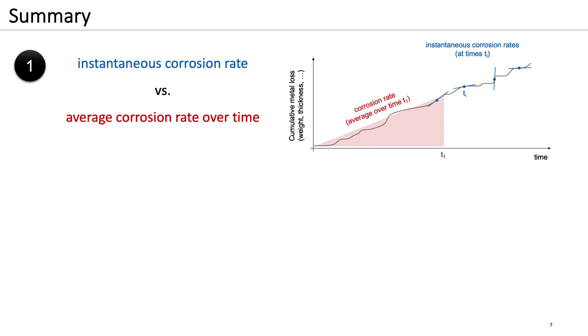In this video, you have learned that corrosion rates can be defined differently. In particular, we distinguish between the instantaneous corrosion rate that can vary greatly over time and the average corrosion rate over certain time periods. These definitions are closely related to what can be obtained from different corrosion rate measurement techniques.